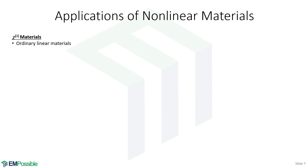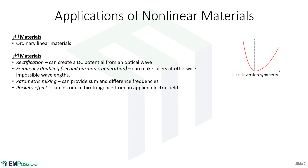For applications: χ1 covers ordinary linear materials with all kinds of well-studied properties. The χ2 corresponds to asymmetric potential wells. From χ2 we get optical rectification with its DC offset, frequency doubling, and parametric mixing — send two different frequencies into a nonlinear material and you get the sum and difference frequencies out, enabling heterodyning and similar techniques.